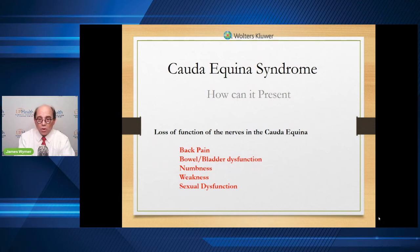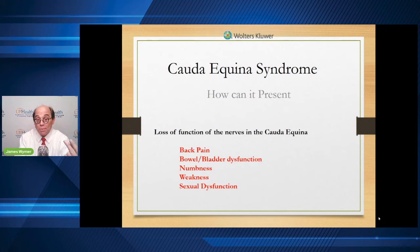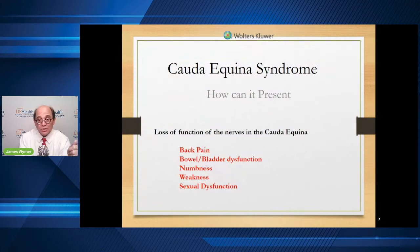Expanding on that further: the loss of function of the nerves in the cauda equina presents with, number one, back pain — if you've got a herniated disc, inflammation, or irritation in the back, back pain can be present, though not everybody with cauda equina gets it. We mentioned bowel and bladder dysfunction. We mentioned saddle anesthesia and numbness. Weakness in the legs can be present, and sexual dysfunction as well. These are all symptoms that are part of cauda equina, but not necessarily does everybody get all of them — that's why we have that other definition for the key symptoms.